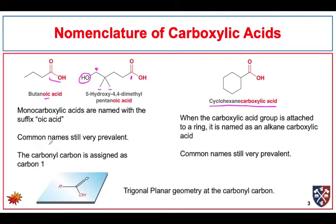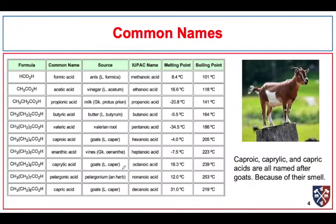Common names for a lot of carboxylic acids are very prevalent. Here we see carboxylic acids from 1 through 10 carbon atoms, with the IUPAC name, some of the common names, the typical source — and a lot of times it was the source that led to the common names — and some of the physical properties for carboxylic acids.